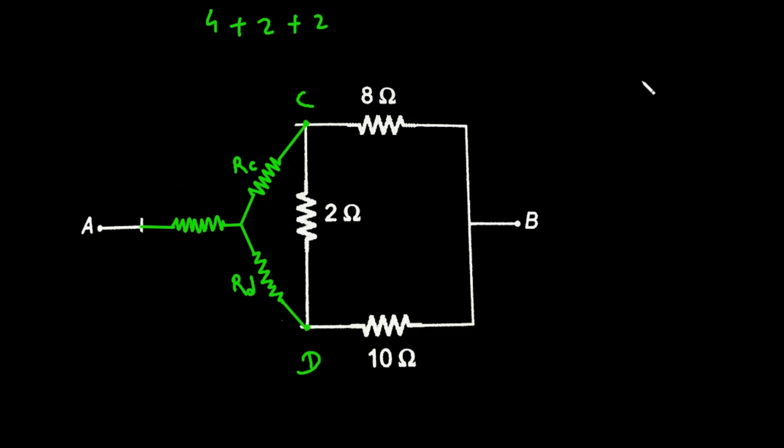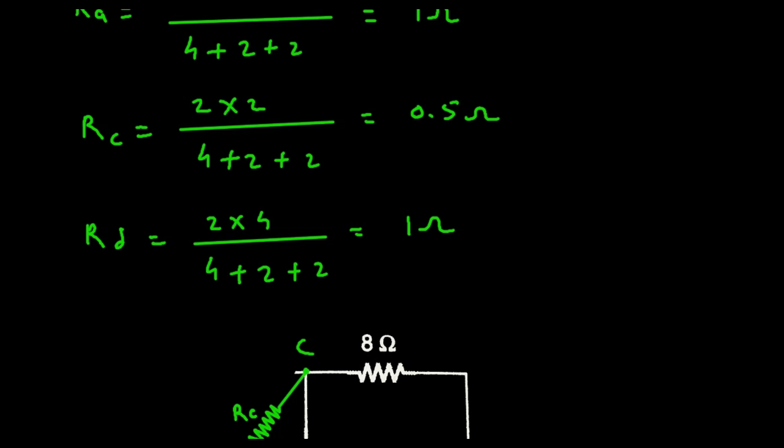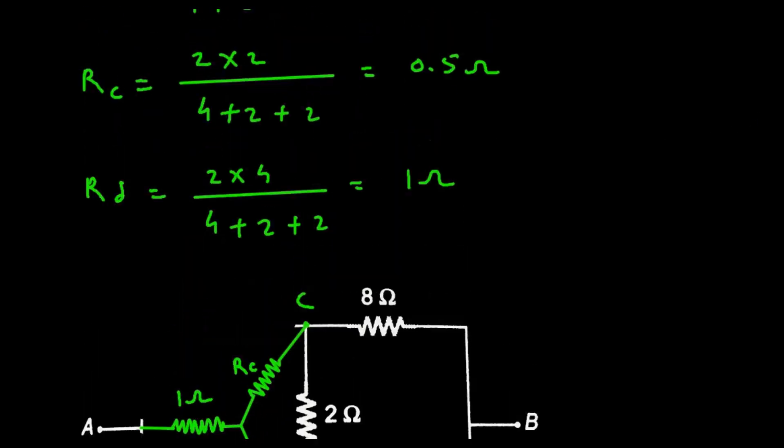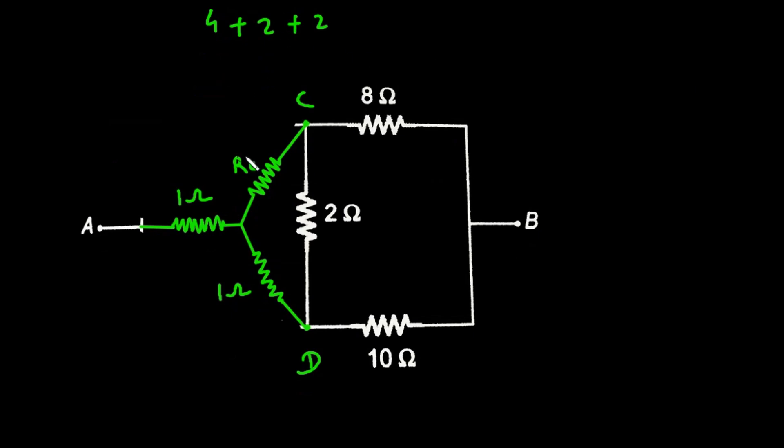Now here in place of R A we can write 1 ohm. In place of R D we can write 1 ohm. And in place of R C we can write 0.5 ohm.